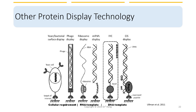In ribosome display, a library of proteins is generated by in vitro transcription and translation in the presence of ribosomes, which allows the proteins to be expressed and displayed on the ribosome surface. In mRNA display, a library of proteins is generated by in vitro transcription and translation in the presence of puromycin-conjugated DNA template, which allows the proteins to be covalently attached to the messenger RNA. In cell-free display, a library of proteins is generated by in vitro transcription and translation using a cell-free protein synthesis system. Overall, these protein display technologies offer alternative ways to generate and screen protein libraries for specific binding properties.